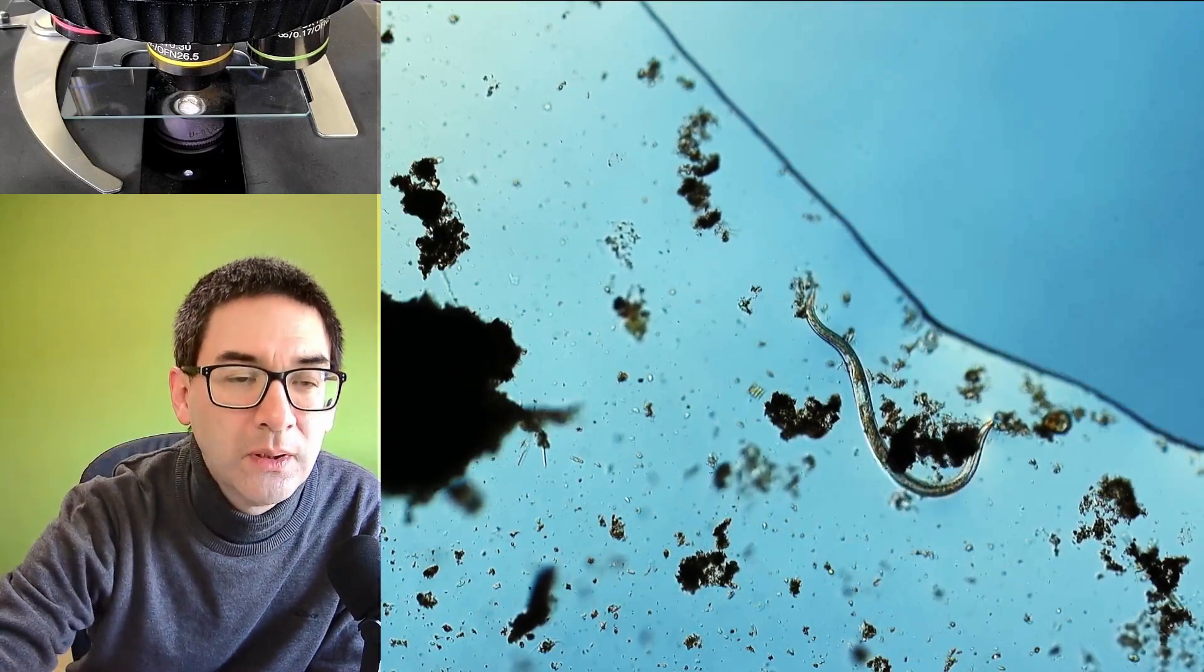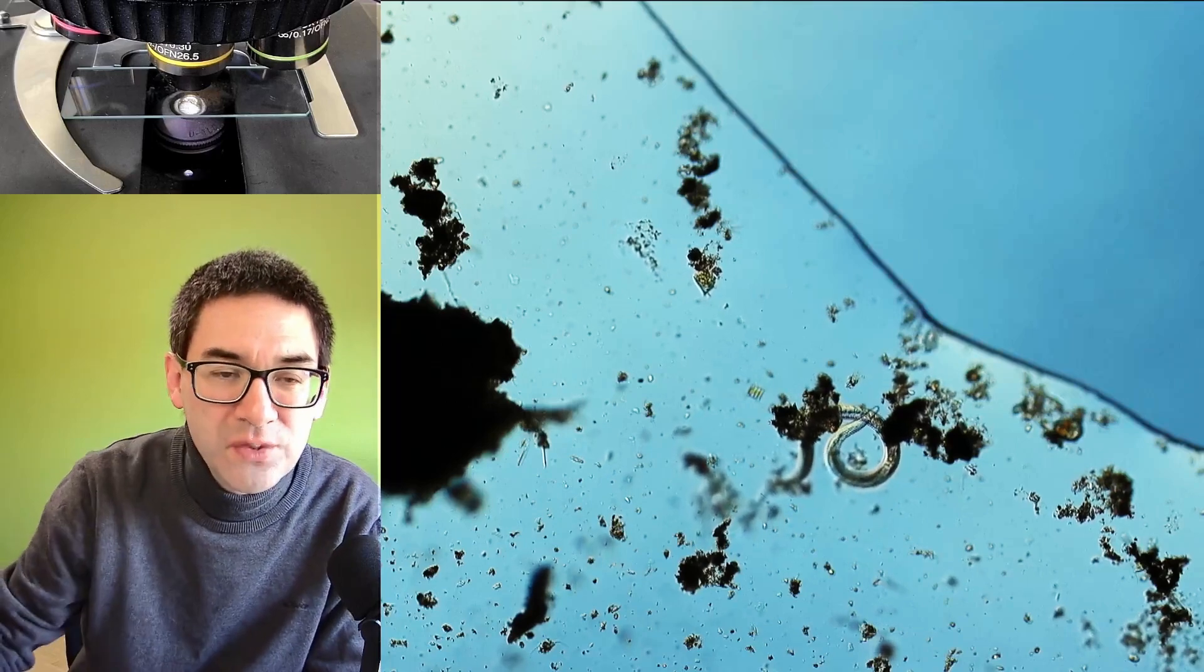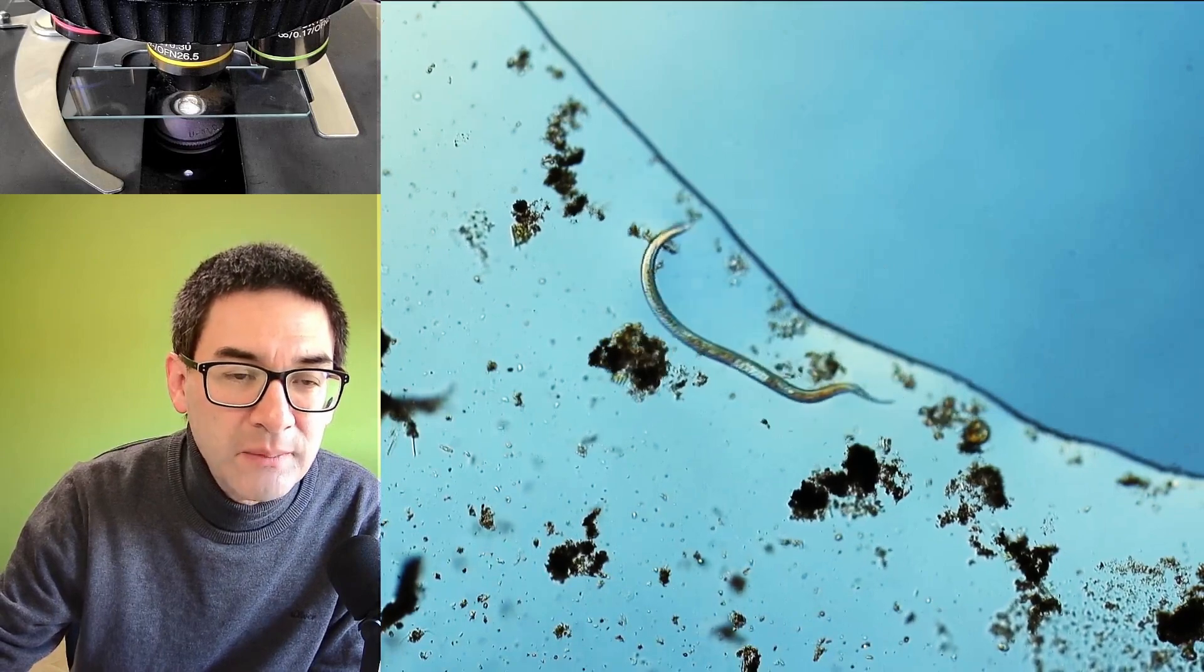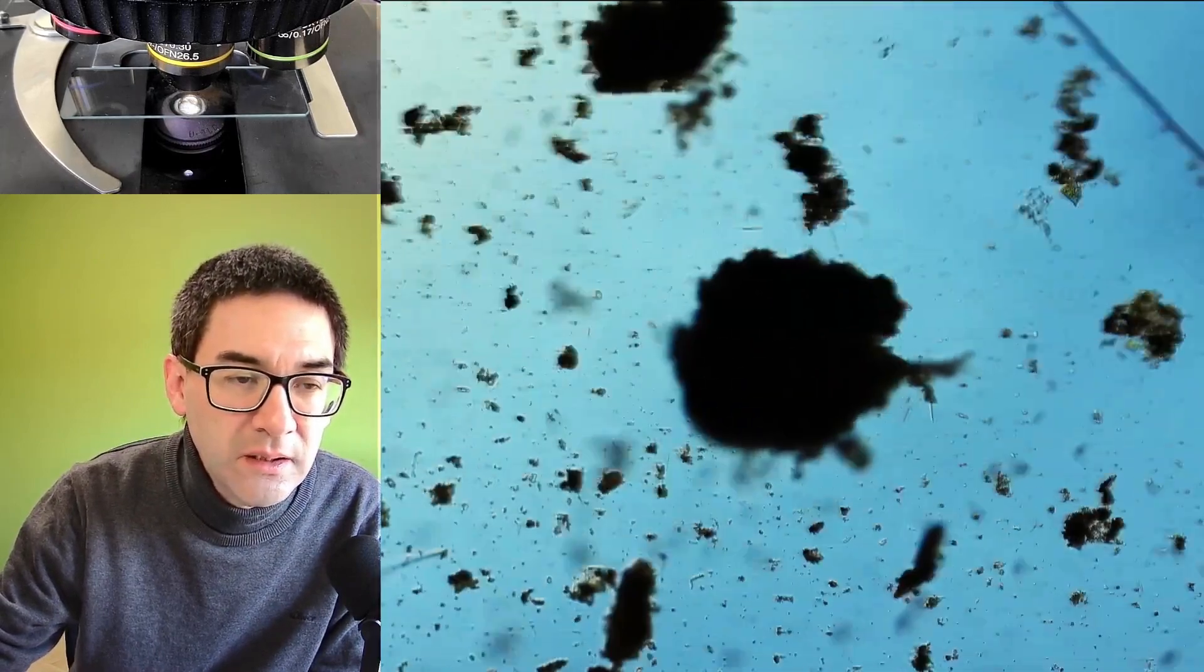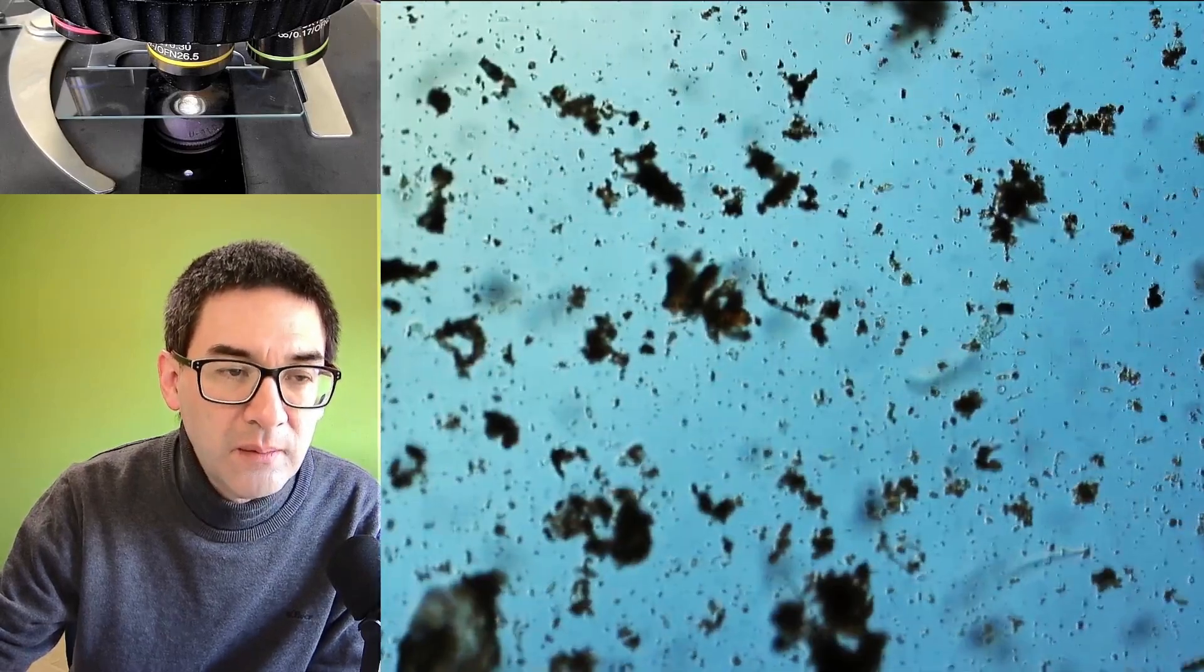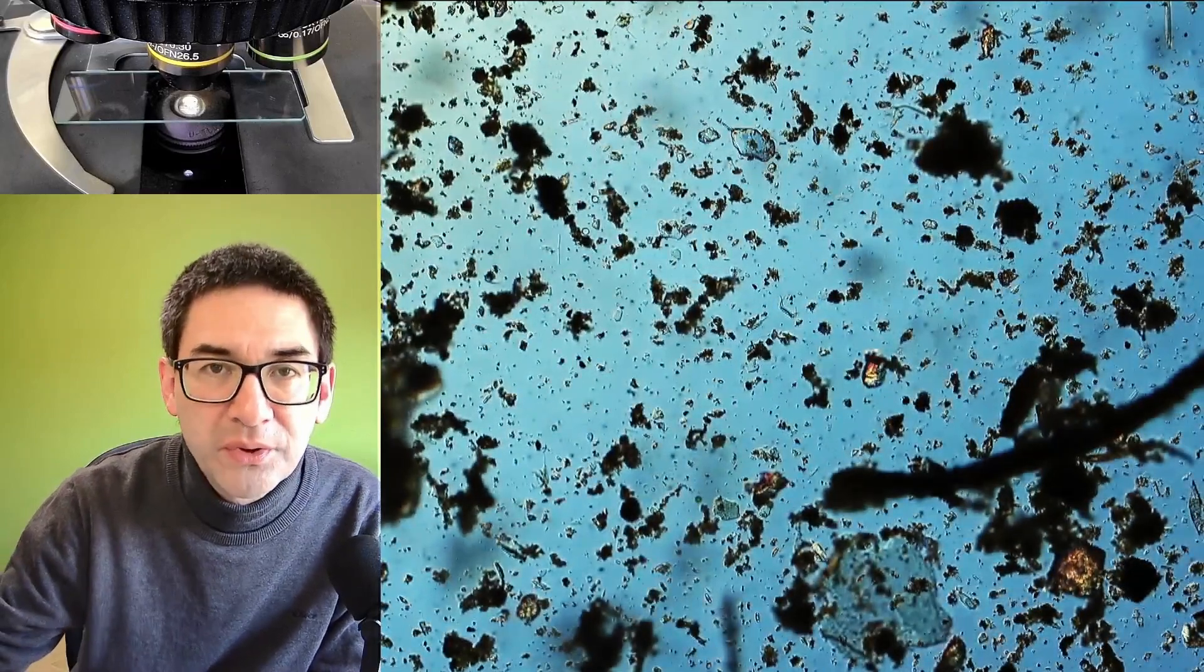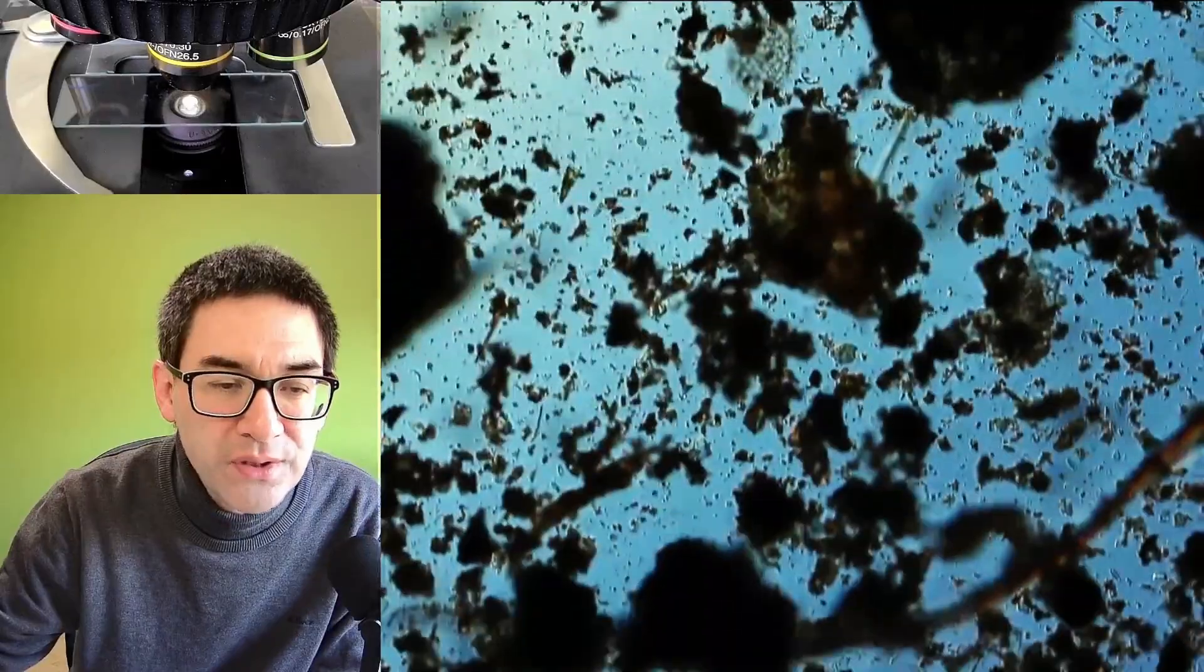So this is the moss sample one day later. Well so far no tardigrade but at least I found a few nematode worms and this one is actually fairly large, evidently decomposing the organic material. And I found a rotifer and a ciliate so there are also other living things creatures in there but not as many as I hoped to be able to find.